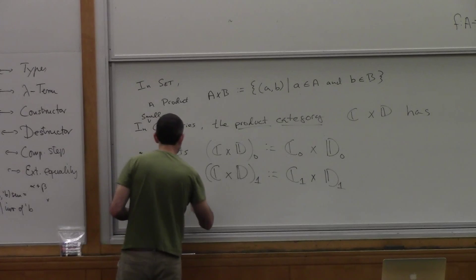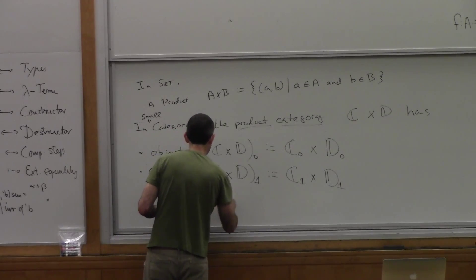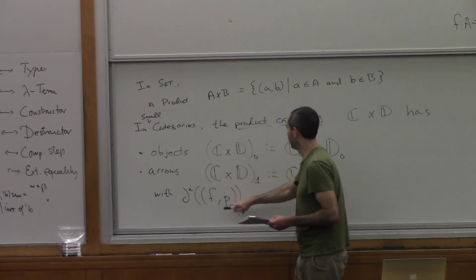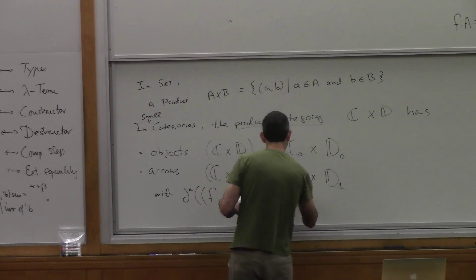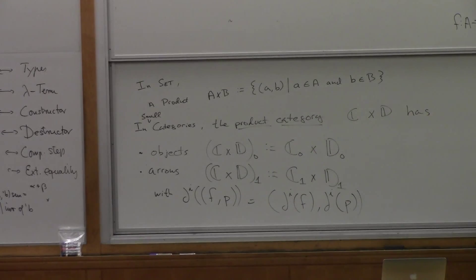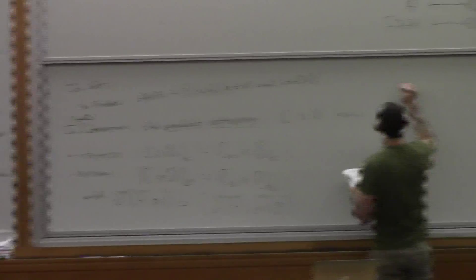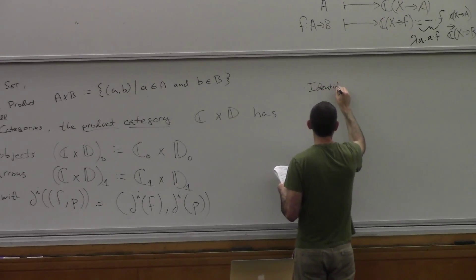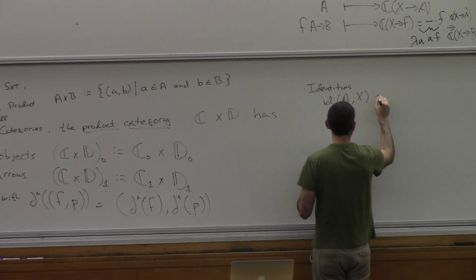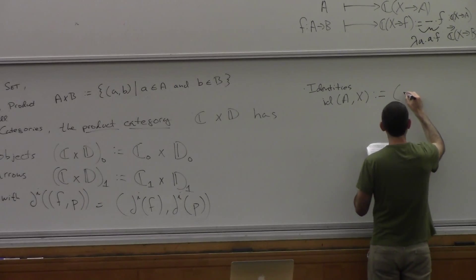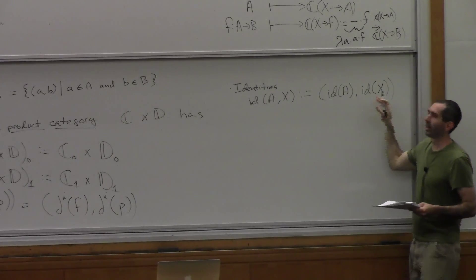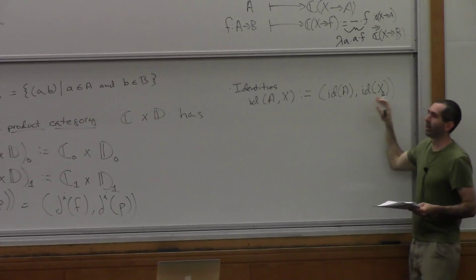The object set of C × D is just the object set of C crossed with the object set of D, and likewise the arrow set of the product is the product of the arrow sets. The boundary maps applied to a pair of arrows (F from C, P from D) give the pair of the respective boundaries applied to each. The identities and compositions are just what you would expect: the identity on a pair of objects is the pair of identity arrows.